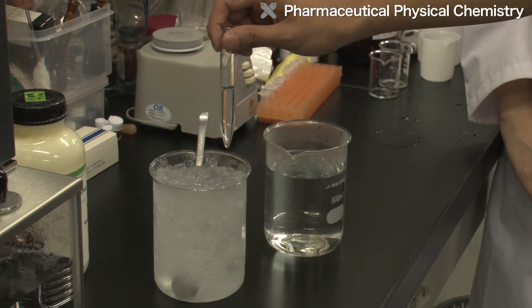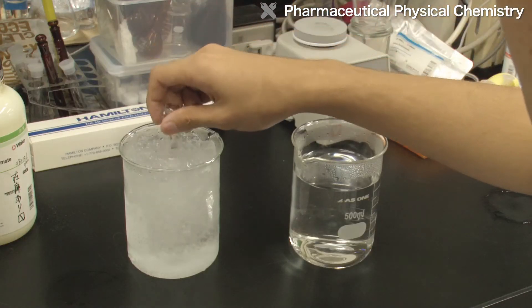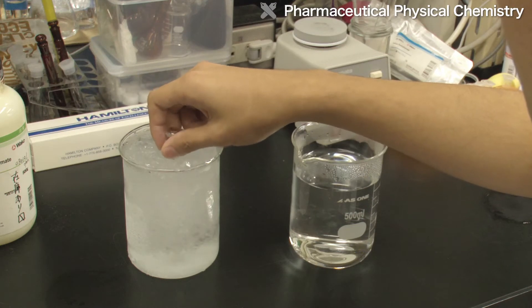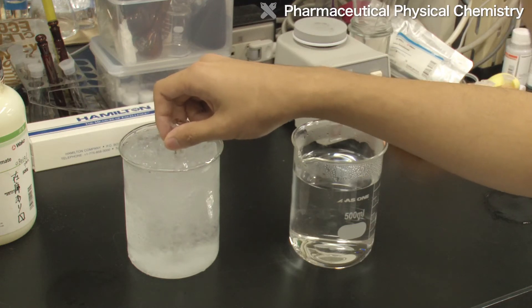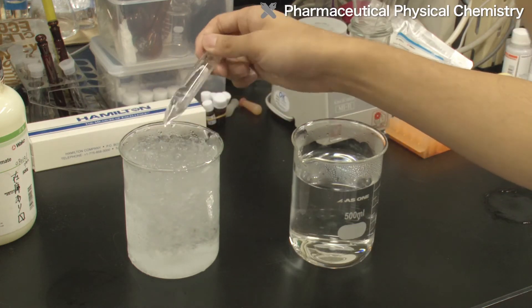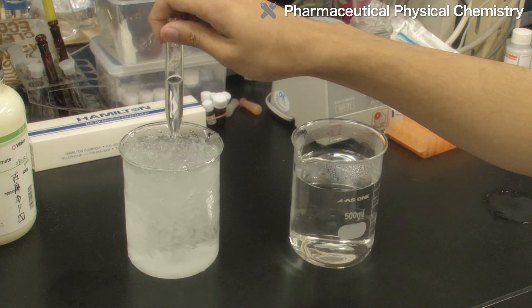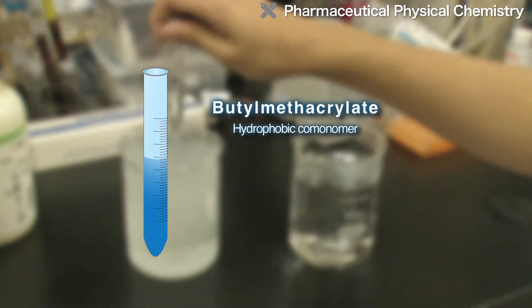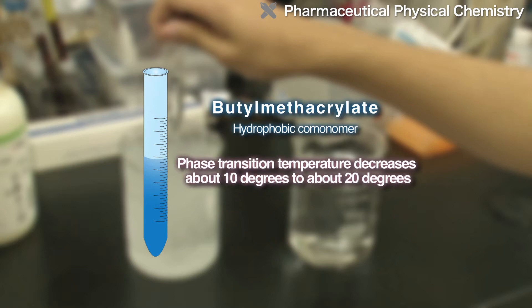Since temperature-responsive polymers are synthetic polymers, it is possible to freely control the temperature at which properties change. For example, when butylmethacrylate, a hydrophobic comonomer, is copolymerized to a temperature-responsive polymer at a concentration of about 5%, the phase transition temperature decreases about 10 degrees to about 20 degrees.